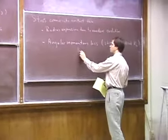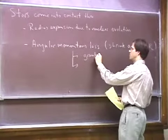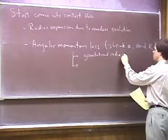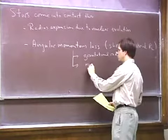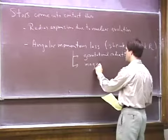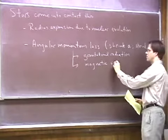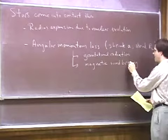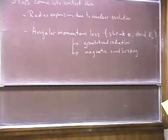There are two ways to lose angular momentum. One is through gravitational radiation, which is important at very short orbital periods. Another, believed to be more important for most non-degenerate stars, is magnetic wind braking — and since magnetic fields are involved, one should not expect very precise calculations.